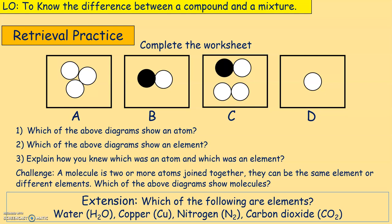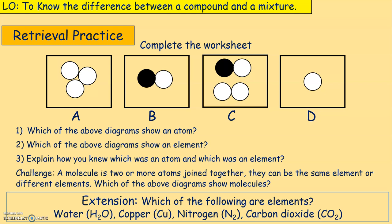Which of the above diagrams shows an atom? A is showing three different things; B is showing two different types; C is showing two different types but more of one; D is showing just one. So which diagram shows an atom? The answer is D. I hope you got that right — if not, please correct that mistake.